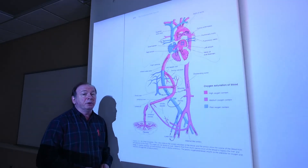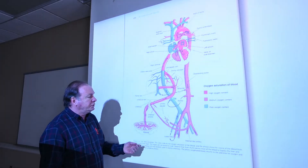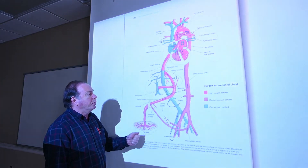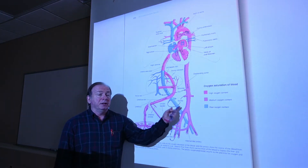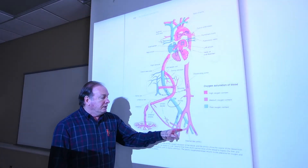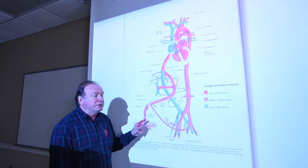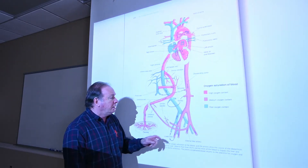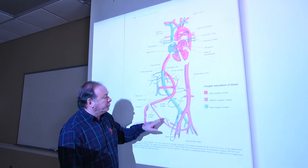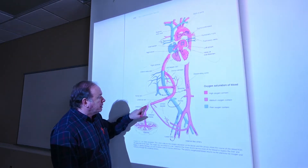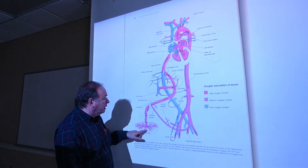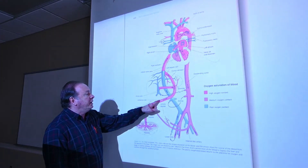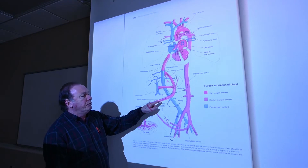This illustration from your textbook shows fetal circulation — what's going on before you're born. It's important to remember that blood is supplied to the placenta by vessels called umbilical arteries. These vessels come out and go to the umbilical cord, reaching out to the placental region of the mother. That blood is then returned through the umbilical vein.